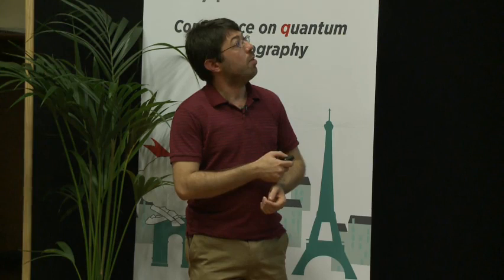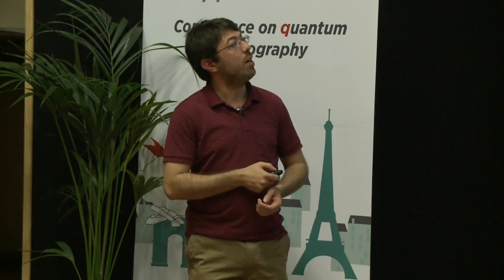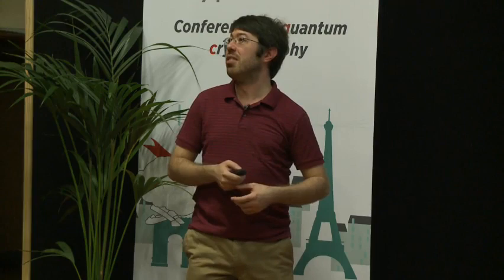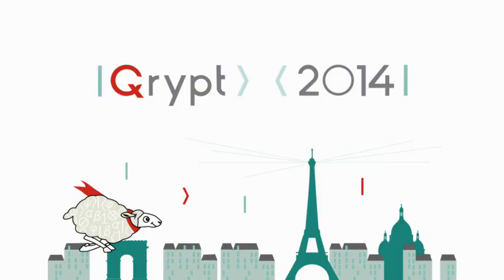Speaker response: To pass with probability one — the problem is that in test two, even the ideal state cannot come out as the all-zero string all the time. So even the honest protocol would not work.